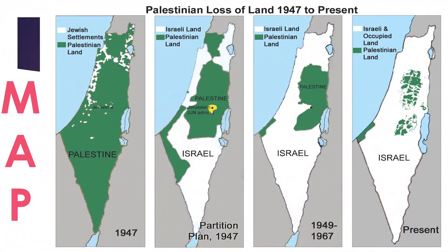This map shows that since 1947, the progression of Arab-Palestinian to Jewish Israeli land has been significant. Currently, there is little Palestinian land left, as most of the land is Israel. You can see the green is the Palestinian land and the white is Israeli-occupied land. Starting from 1947, about half of it was Palestine, but going all the way to the present day, half of it is now Israel's.